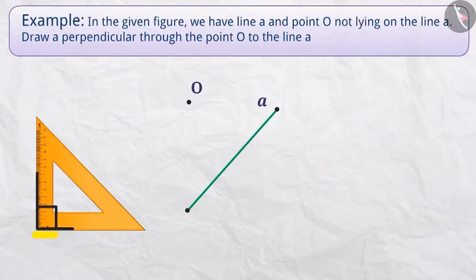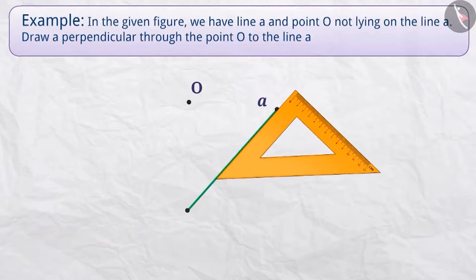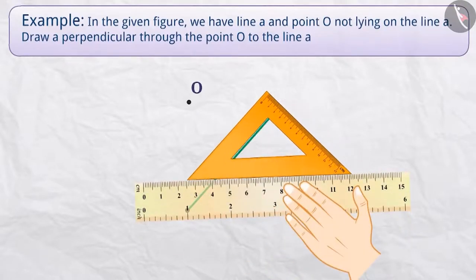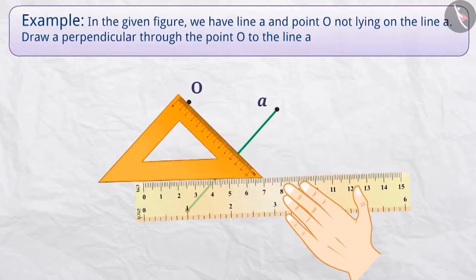Place a set square on A in such a way that one arm of its right angle aligns along with A. Next, place a ruler along the edge opposite to the right angle of the set square. Hold the ruler tight and slide the set square along the ruler till the point O touches the other arm of the set square.